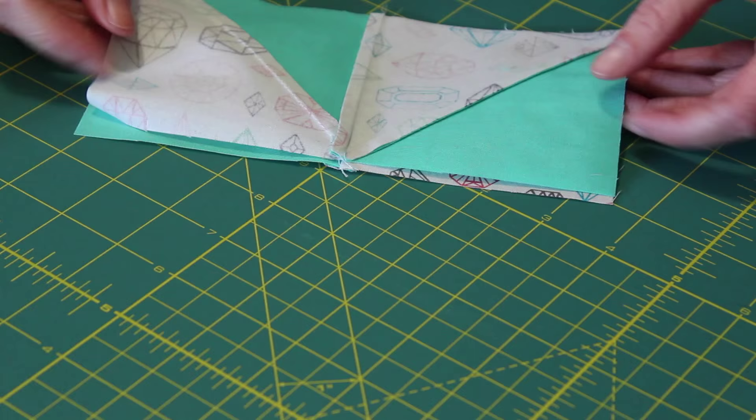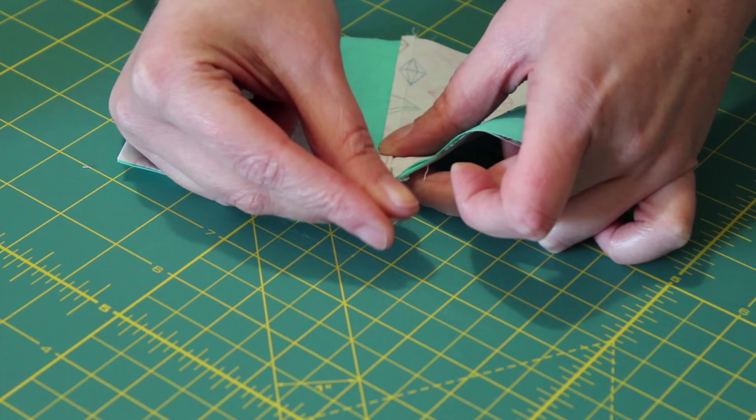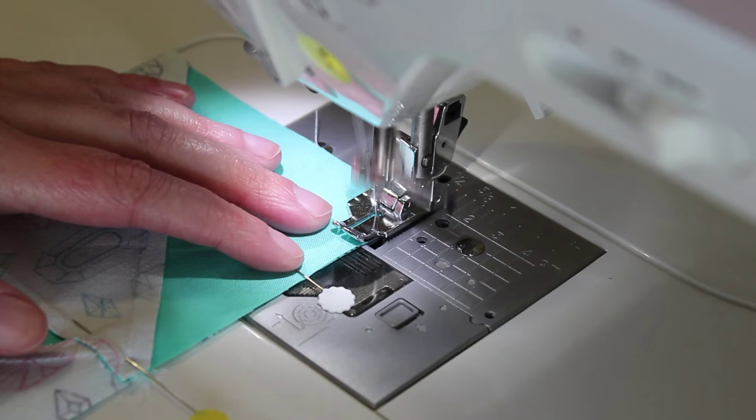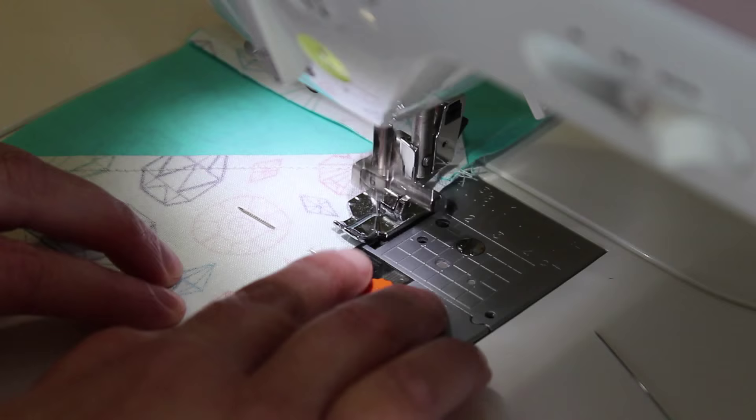Flip the top row over onto the bottom, nesting and pinning the two centre seams along with the rest of the edge together. Sew one last quarter inch seam along this edge, ensuring that the centre seams are lying flat before sewing over them.